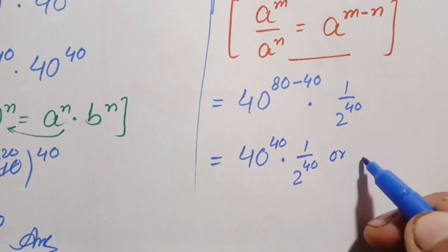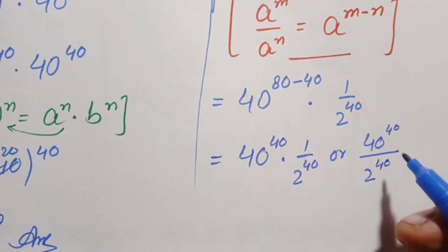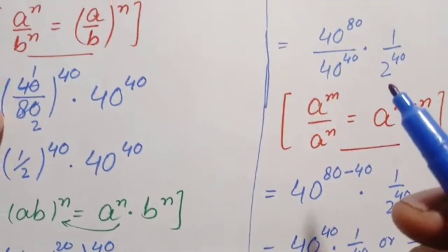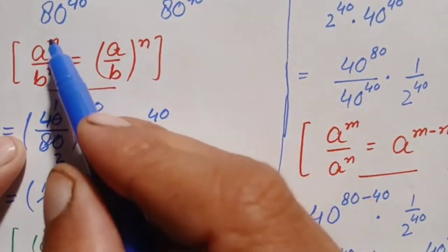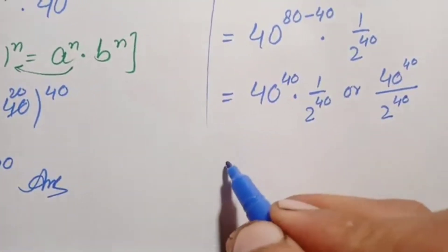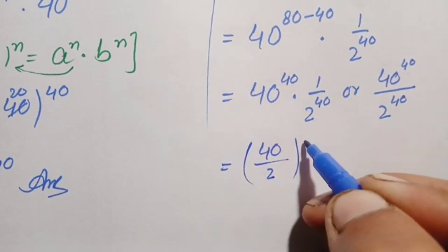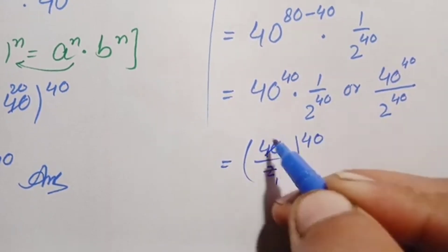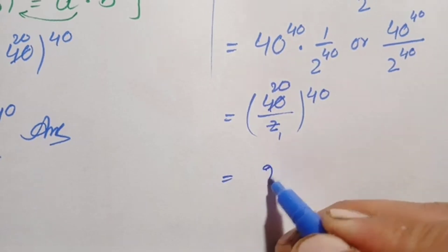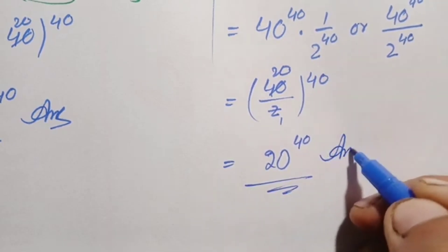We rewrite this as 40 raised to power 40 divided by 2 raised to power 40. Now both numerator and denominator have the same power, so we apply the same-power division identity, dividing the bases: 40 divided by 2 equals 20. This gives 20 raised to power 40. So 20 raised to power 40 is our final answer using the second method as well.